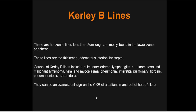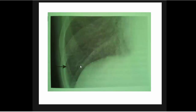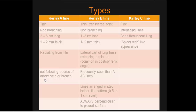Causes of Kerley B lines include pulmonary edema, lymphatic carcinomatosa, malignant lymphoma, viral and mycoplasmal pneumonia, interstitial pulmonary fibrosis, pneumoconiosis, and sarcoidosis. They can be seen on X-ray in patients in and out of heart failure. Kerley B lines are perpendicular to the pleural surface. Kerley A lines are non-branching, 2–3 centimeters long, 1–2 mm thick, radiating from the hilum. Kerley B lines are non-branching, 1–3 cm long, 1–2 mm thick, in the lateral part of the lung base extending to the pleura.